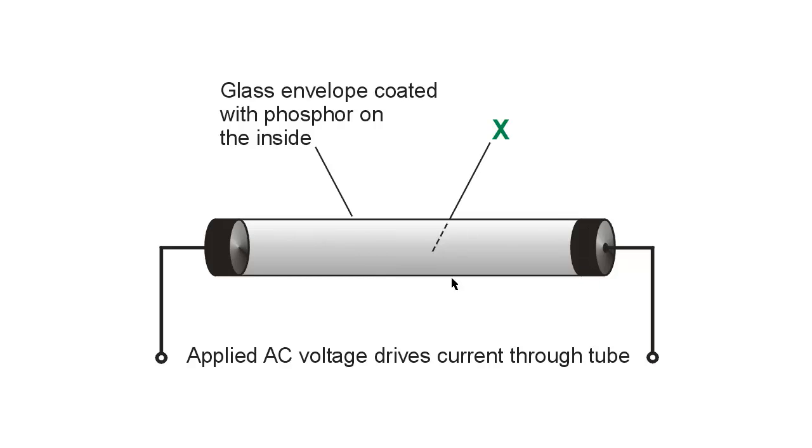But anyway, this glass tube blocks most of that ultraviolet, so it wouldn't get out anyway, but it strikes the phosphor on the inside of the glass tube, and that phosphor then glows the visible light that you see.